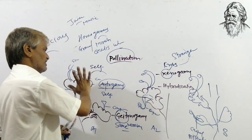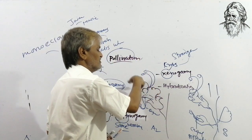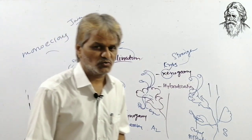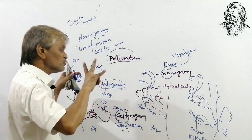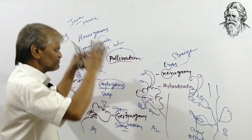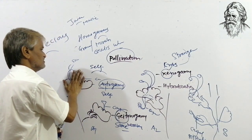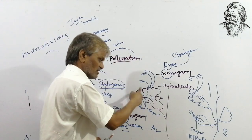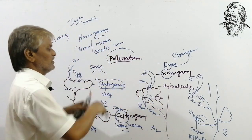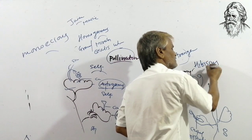Xenogamy: transfer of pollen grains from the anther of one flower of one plant body to the receptive stigma of another flower of another plant body of the same species is called xenogamy. Pollination takes place between two flowers of two plants of the same species. A common example is hibiscus.